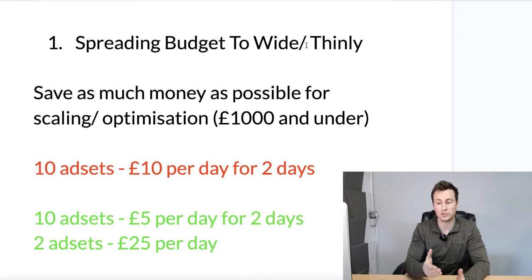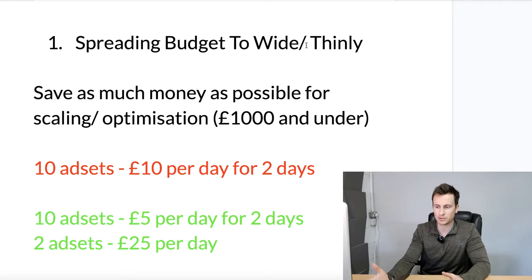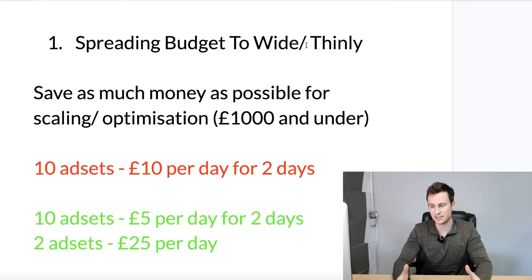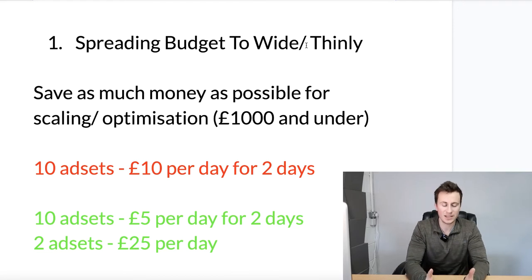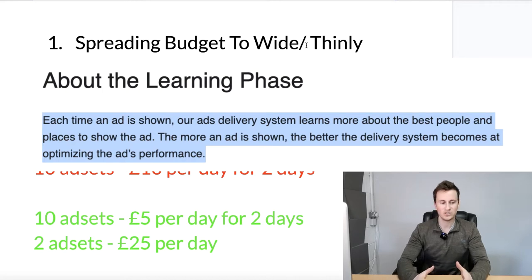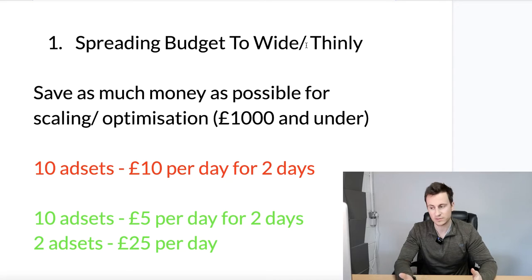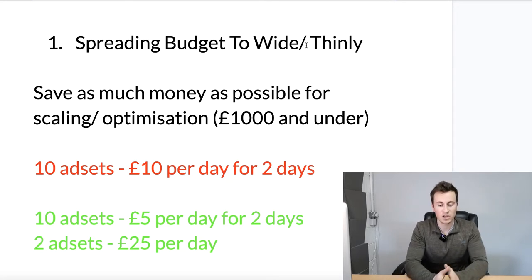Take the top one or two best performing ad sets and move them into their own campaign where you're going to scale them and devote the majority of your budget. To illustrate this, there's an example on screen. Red is what you should not be doing — don't take 10 ad sets at £10 per day for two days and spend £200, essentially all of your budget, on that testing stage. Spending £10 per day, you're never going to get that ad set to optimize; it's never going to exit that learning phase.